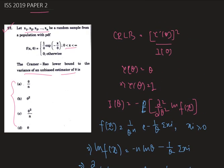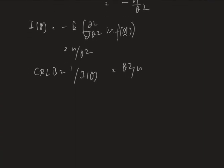So the CRLB is theta square by n. We just need to find the CRLB here, therefore the correct answer is option c, which is theta square by n. So option c is correct. That's all for today. Thank you very much.